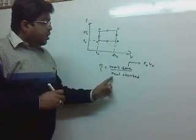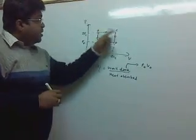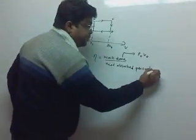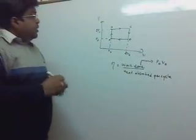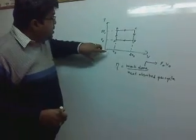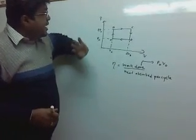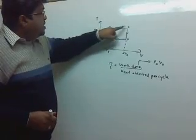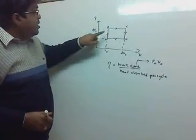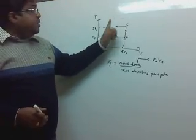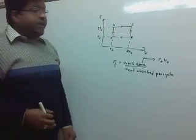Heat absorbed by the system. So in this case, when the gas expands from B to C, gas is expanding. So in this case, expansion at constant pressure. From B to C, expansion at constant pressure. So temperature is increasing, so there is absorption of heat.